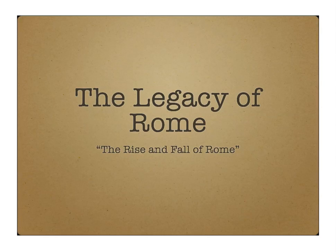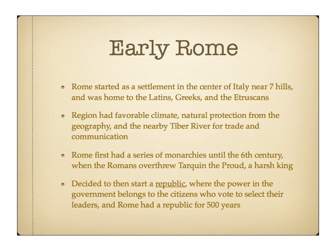We're going to start with this topic which, honestly, should hopefully be a review since this is the last thing you should have learned in sixth grade. Before the Roman Empire, before the Roman Republic, there was Rome — a settlement in the center of Italy near Seven Hills. It was home to the Latins, the Greeks, and the Etruscans. Rome had a really great climate and natural protection because of the Seven Hills, and the Tiber River was nearby. Waterways are important for trade and communication. Before the Roman Republic even started, Rome had a series of monarchs — a whole bunch of kings ruled the settlement.